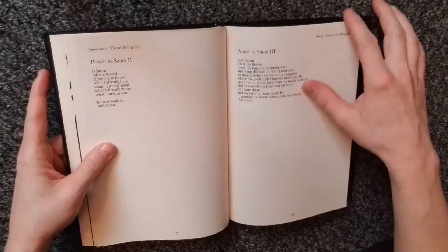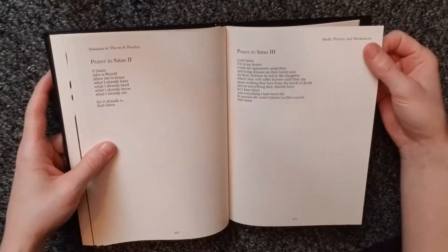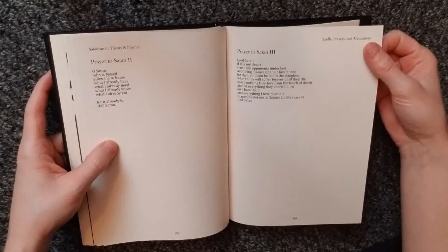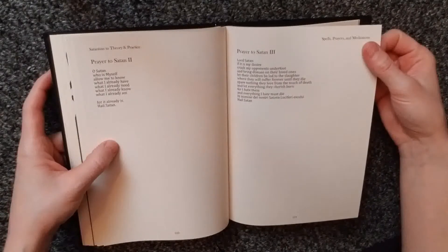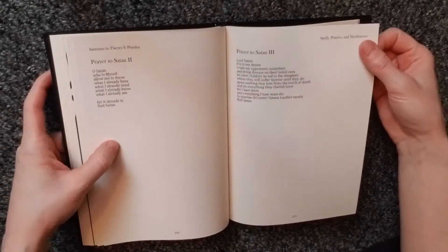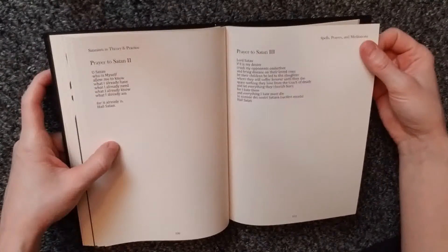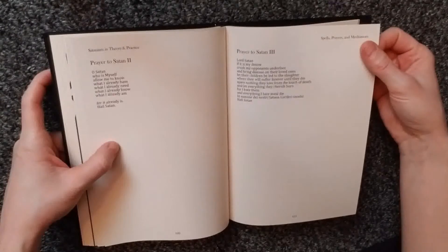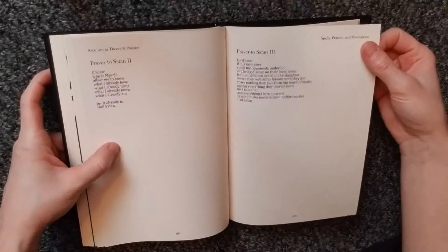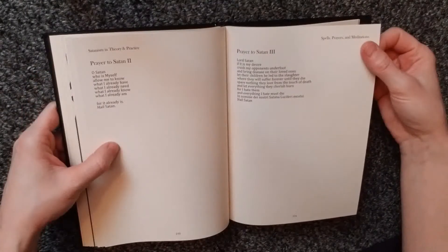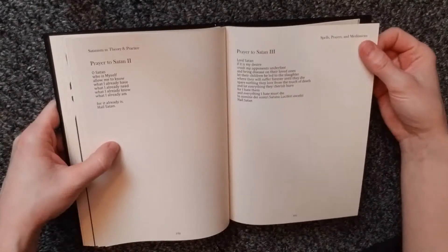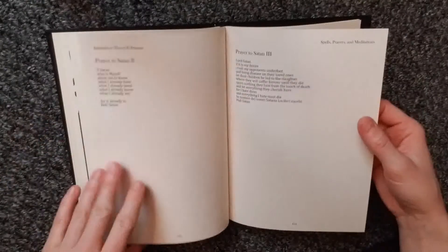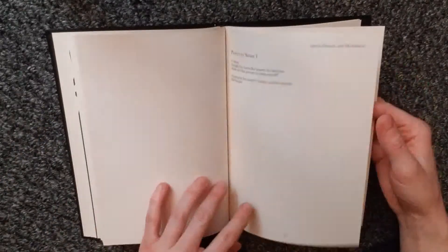Prayer to Satan Three. Lord Satan, if it is my desire, crush my opponents underfoot and bring disease on their loved ones. Let their children be led to the slaughter where they will suffer forever until they die. Spare nothing they love from the touch of death and let everything they cherish burn for I hate them and everything I hate must die. In nomine Dei nostri satana luciferi excelsi. Hail Satan. Well, geez.